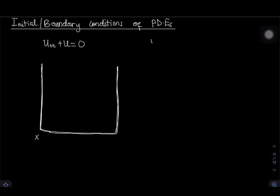For instance, if we assume our solution u is a function of just one space variable and a time variable, then I can have the behavior of the solution at x equal to zero — that's one border — and I can also have the behavior of the solution when x is equal to L. So u(0,t) is going to be equal to some function of t, and g(L,t) is going to be a function of t.